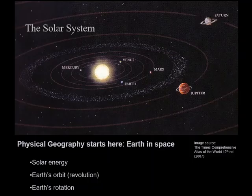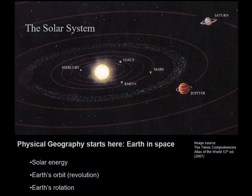The answers to those questions and to lots of other questions in physical geography actually begin with this diagram. Physical geography starts with the Earth in space. With this diagram we can start to think about solar energy, which is one of the major energy inputs to the Earth's surface. We can think about Earth's orbit around the sun and we can think about Earth's rotation. Those three things underpin a huge proportion of what we'll be studying in physical geography, a huge fraction of Earth's surface processes and features.